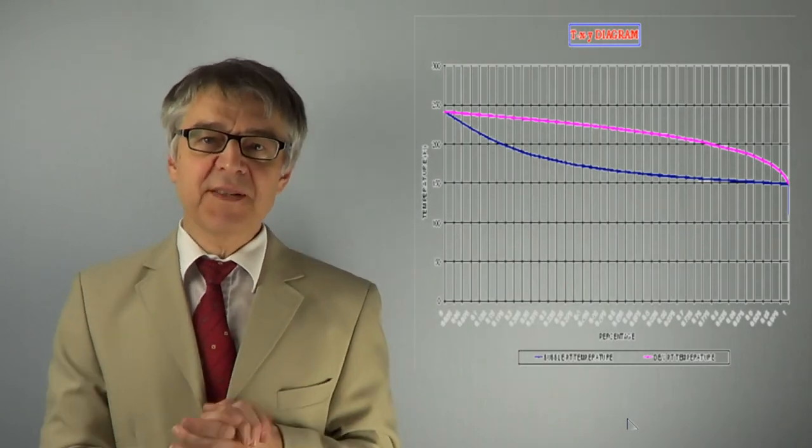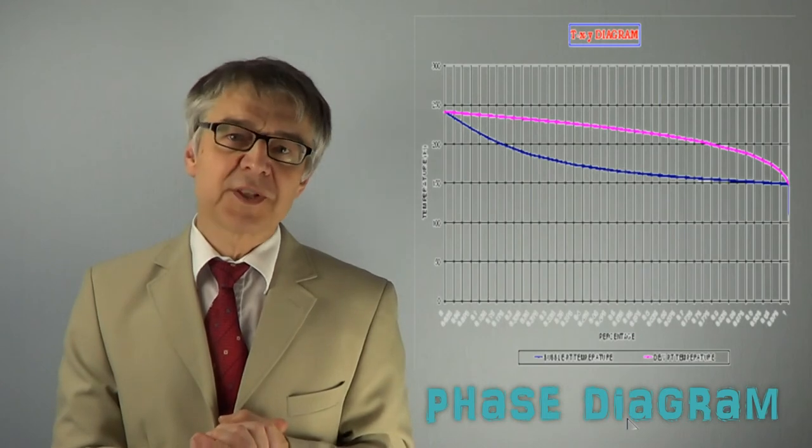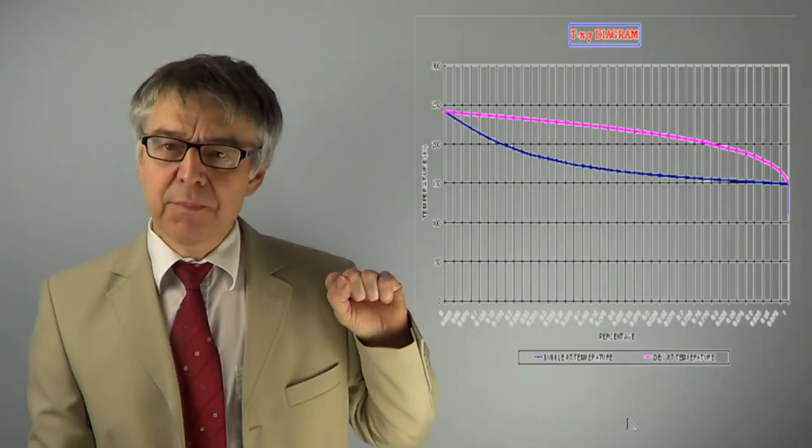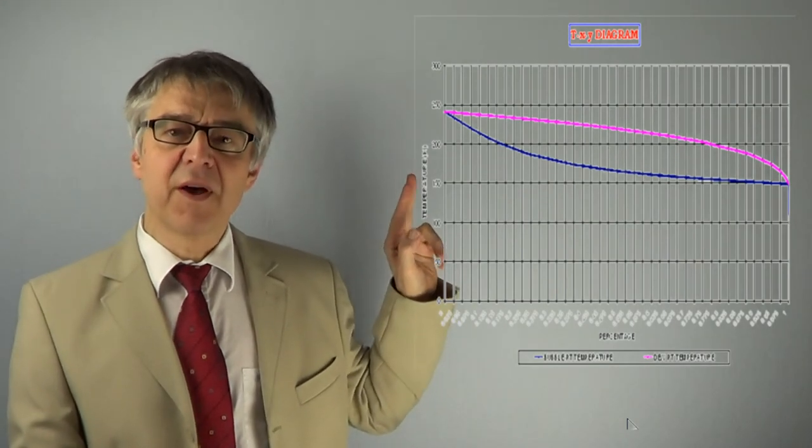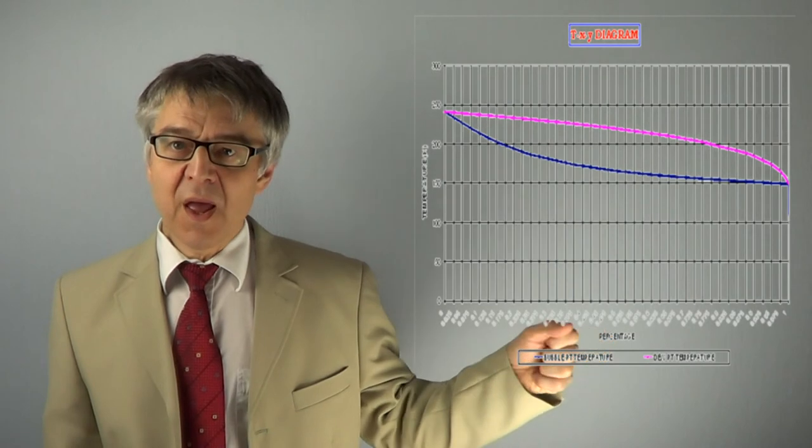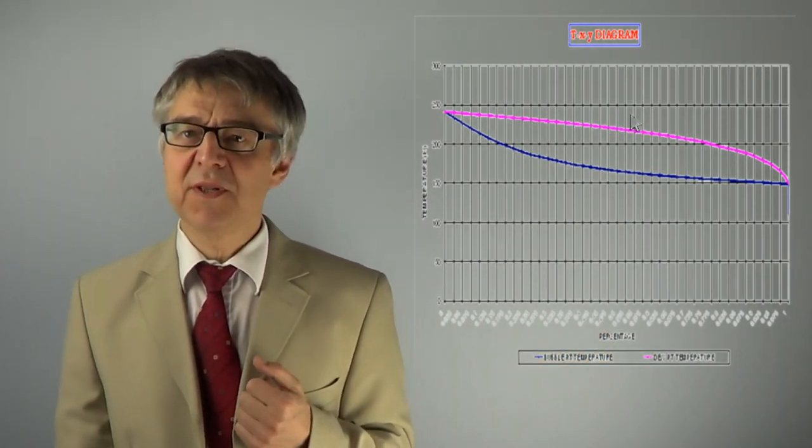Finally, we obtain a phase diagram of this ideal two-component mixture, which looks like this. The boiling points of the pure components are shown on the right and the left-hand side. There are two connecting lines between these boiling points.